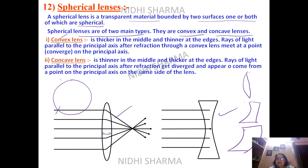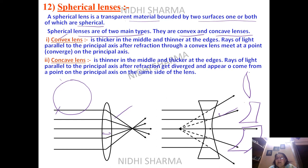A concave lens is a diverging lens. When rays come parallel, they are diverged and do not meet on the right side — they meet virtually on the left side. Both lenses are of opposite nature to each other.